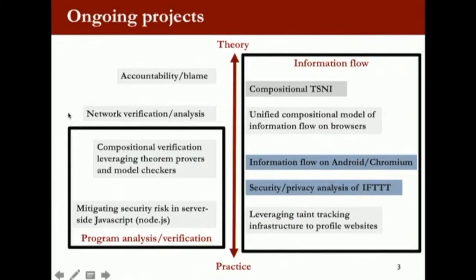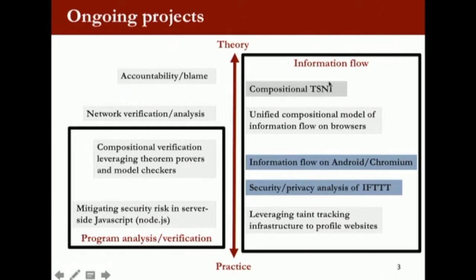I'm also working on program verification with Professor Bhargavan at CMU, where networks can be modeled as distributed programs — network patterns and idioms may allow verification to be more efficient. I also collaborate on the CI side looking at accountability and blame: if something goes wrong, how can I figure out who to assign blame on? But in this talk, I'm just going to talk about two topics in the information flow space.